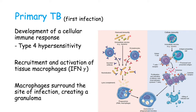The presence of antibodies is not going to be very effective. So we will have the recruitment of T cells and macrophages to develop a cellular immune response. TB is a classic example of a type 4 hypersensitivity reaction, and the recruitment and activation of tissue macrophages is mainly influenced by interferon gamma. These recruited macrophages are going to surround the site of infection, creating a granuloma.